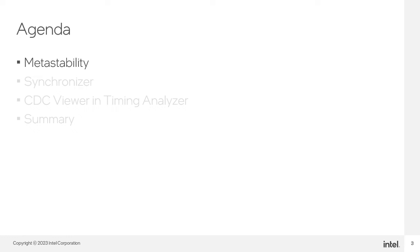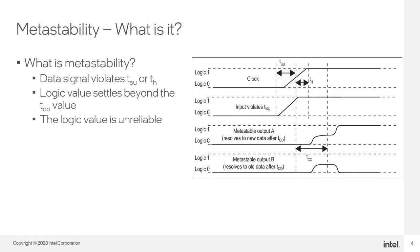First, let's do a quick review of what is metastability. All registers and digital devices such as FPGAs have defined signal timing requirements that allow each register to correctly capture data at its inputs and produce an output signal. To ensure reliable operation, the input to a register must be stable for a minimum time before the clock edge called Register Setup Time, or TSU, and for a minimum time after the clock edge called Register Hold Time, or TH.